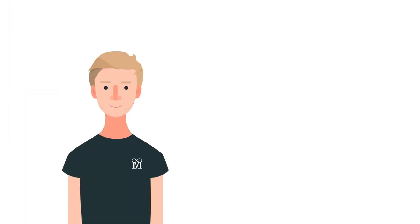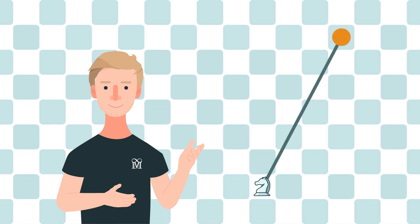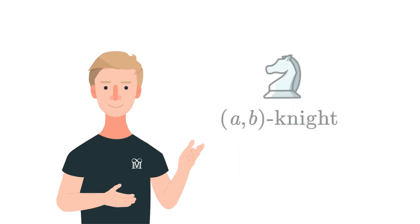Okay, we have the first condition for a,b. The sum of a and b must be odd. So let's consider another example that follows this rule. The 6,3 Knight. It indeed can reach both colors, but it can't reach the 1,0 square. Why? Let's look at the greatest common divisor of a and b. Since in the case of 6,3 Knight, it is equal to 3, then coordinates of every square that the knight can reach are also multiples of 3. 1 is definitely not a multiple of 3, so 6,3 Knight can't reach the 1,0 square. In general, if greatest common divisor of a and b is greater than 1, then for the analogous reason, it also can't reach 1,0 square.